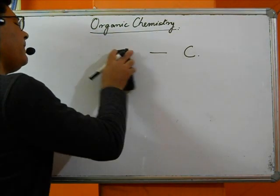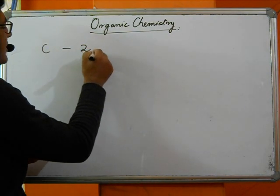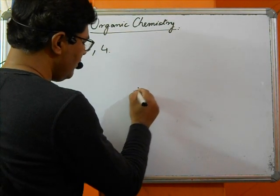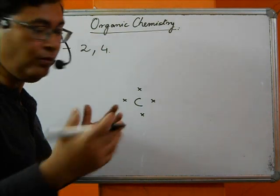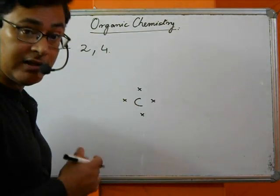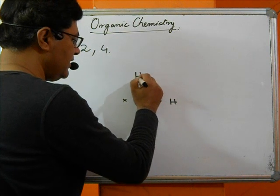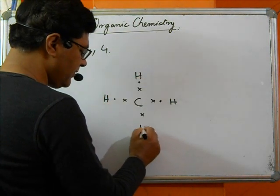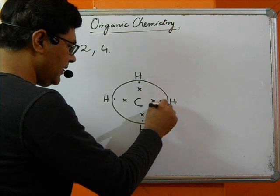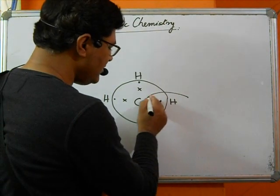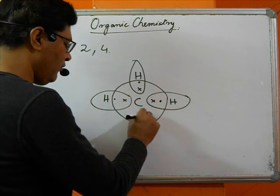When we consider carbon, its electronic configuration is 2, 4, meaning carbon has four electrons in the outermost shell. If hydrogen comes from all four sides, each hydrogen brings one electron. Ultimately, this carbon will satisfy the octet, and hydrogen also gets satisfied, forming four covalent bonds.